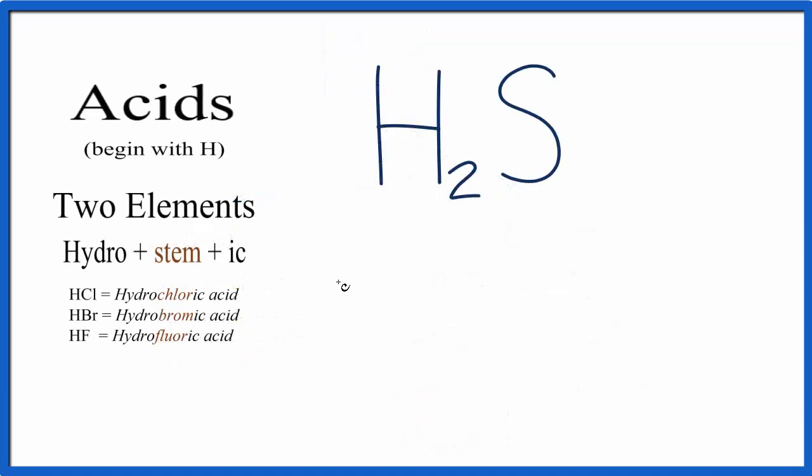We'll start by writing hydro, and then we'll write the stem. So we'll write sulfur here for S, and we'll cross out the UR—that's the stem—and then after the stem we add IC.